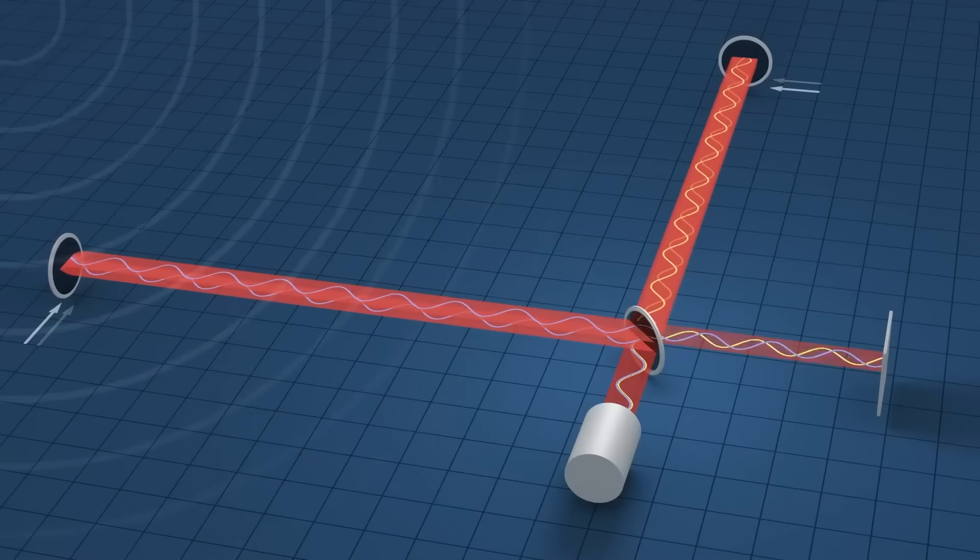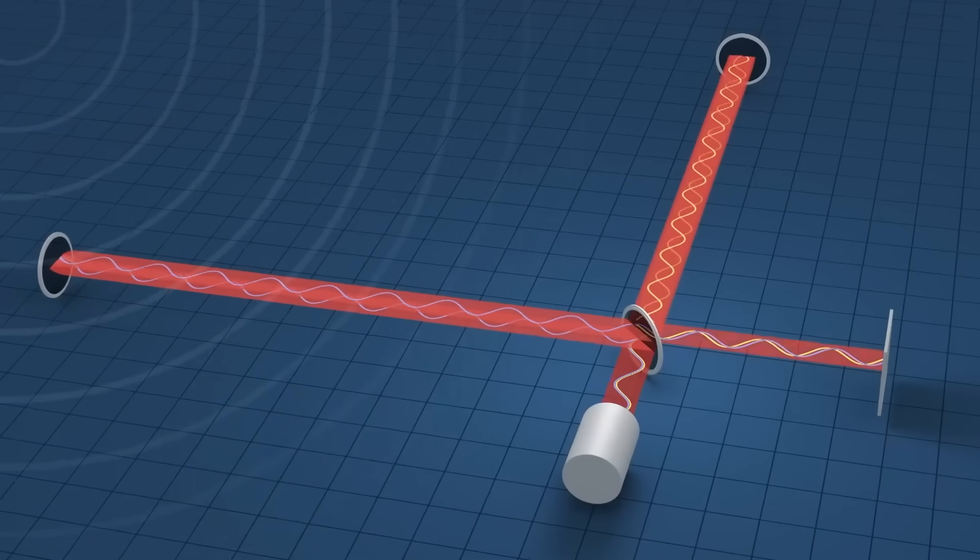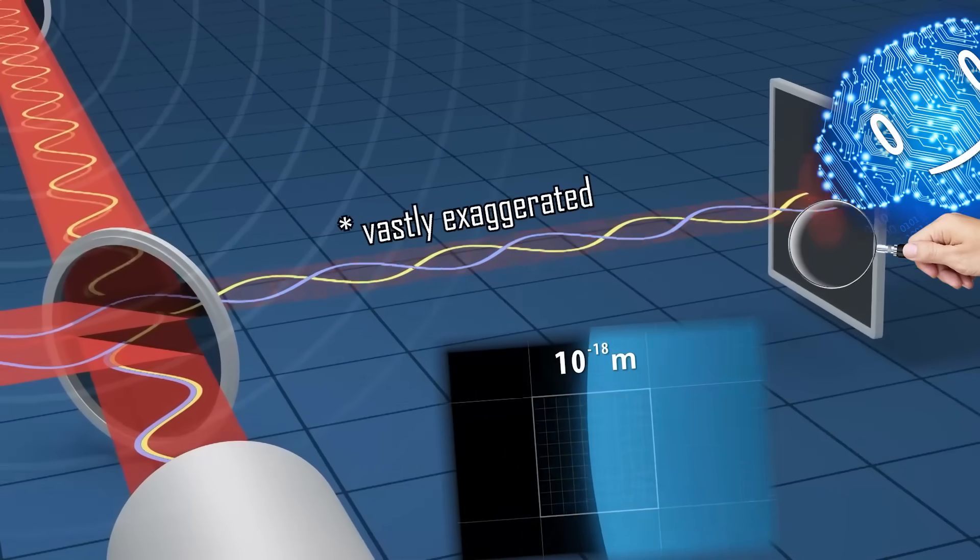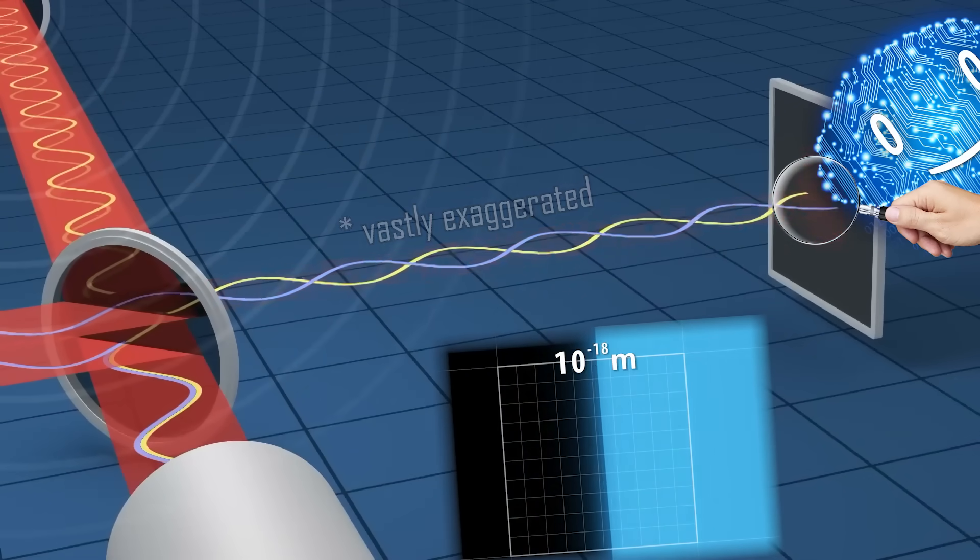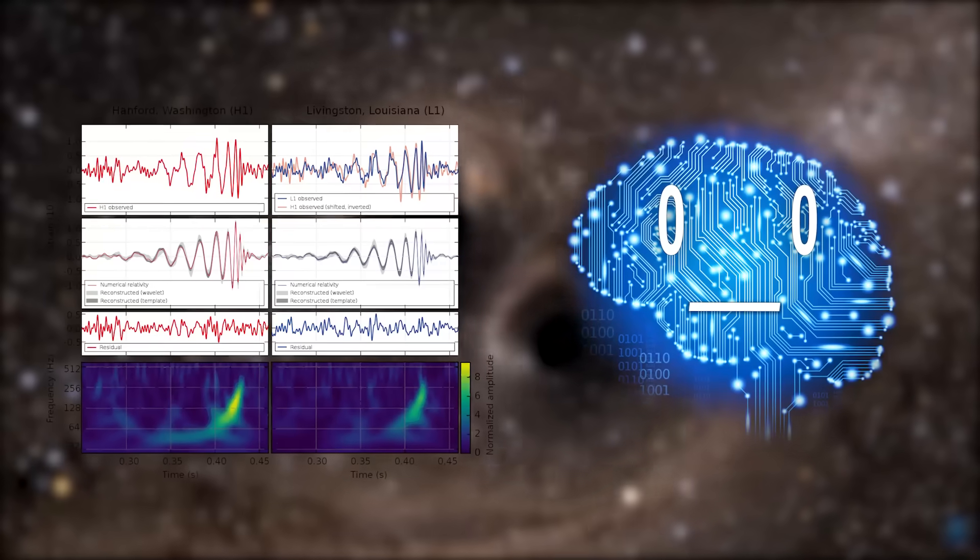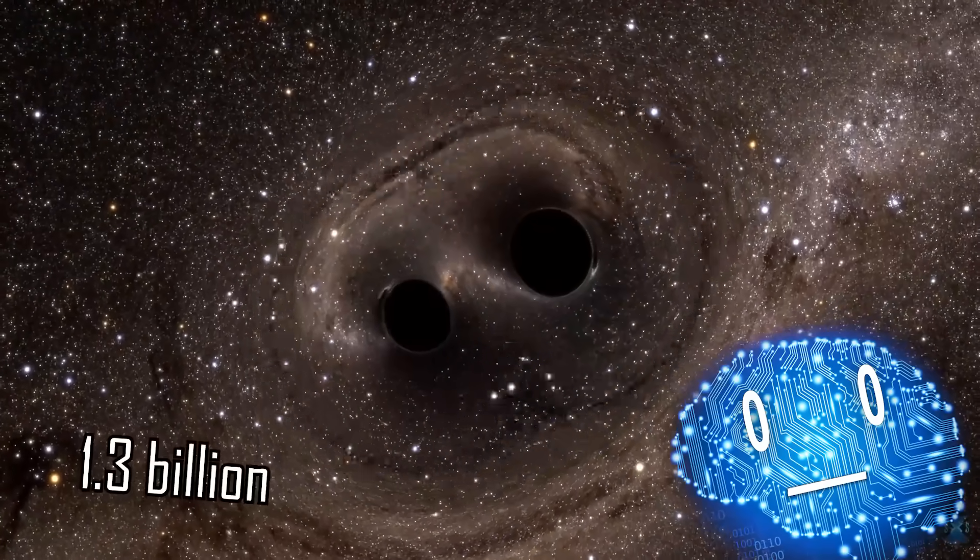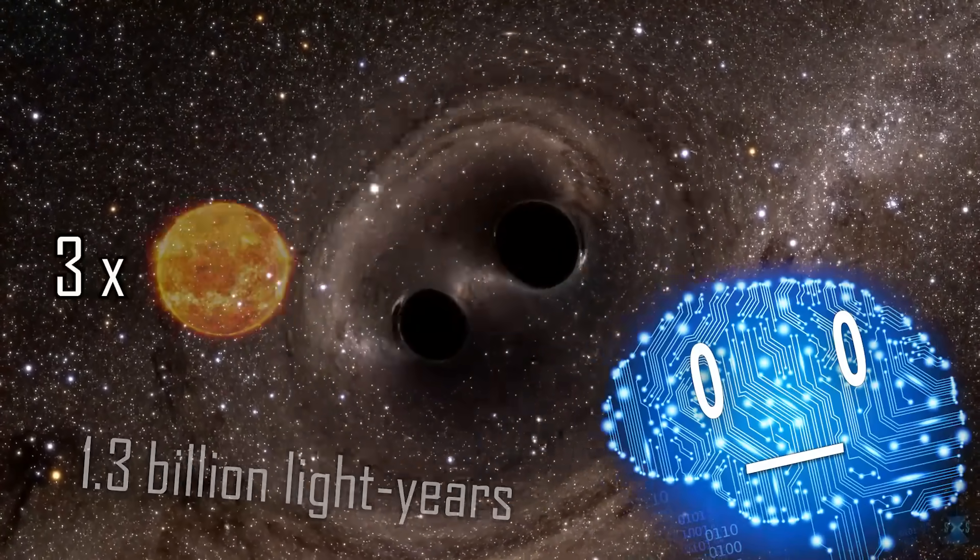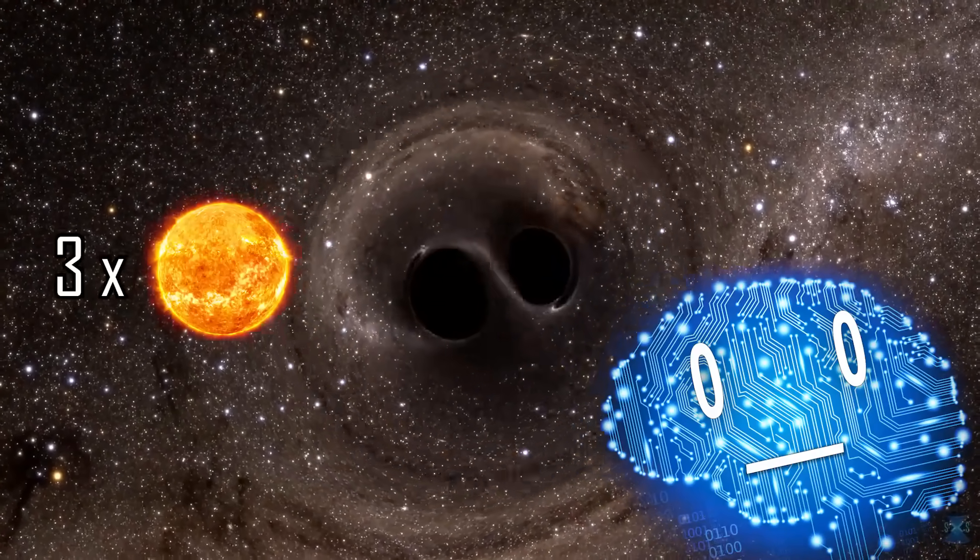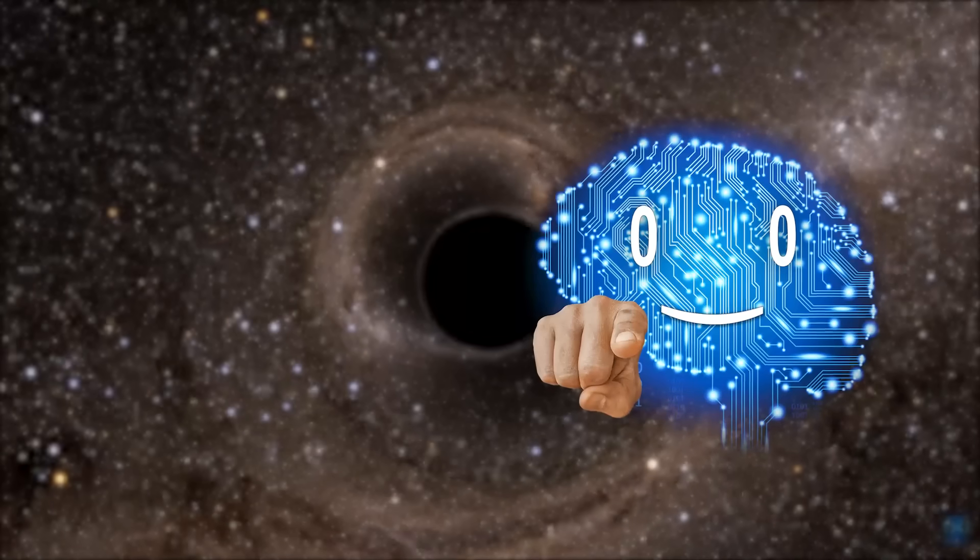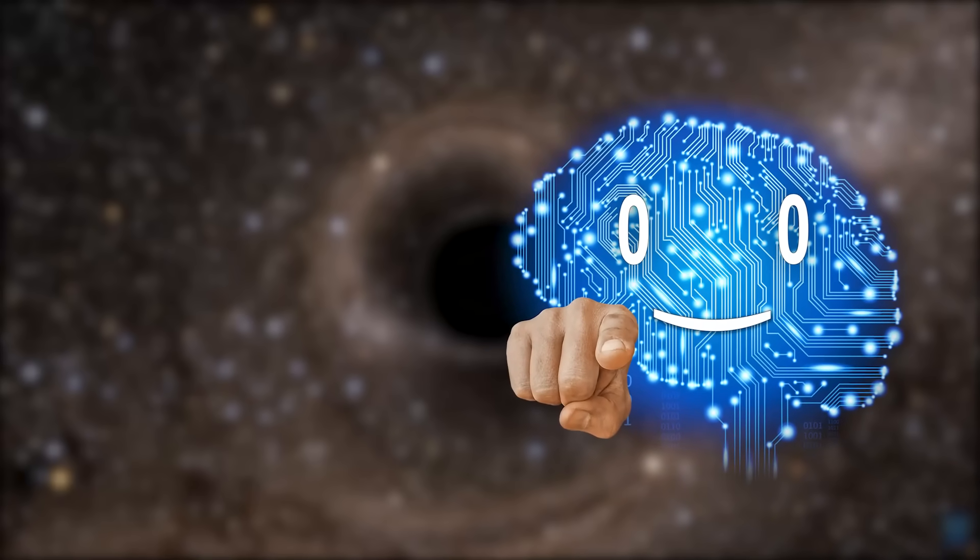The ripples in spacetime can be detected as they ever so slightly bend the space between lasers by about a thousandth the width of a proton at the LIGO detector among others. The first detection was from two black holes merging about 1.3 billion light years away where about three solar masses were converted into gravitational waves. For you mortals who can't read the digital signal, listen to this.